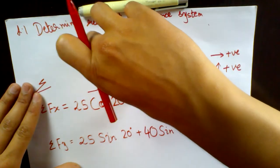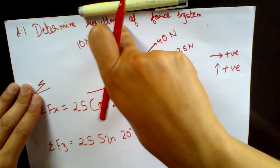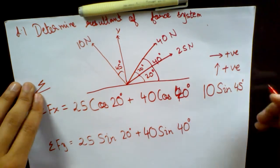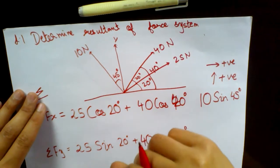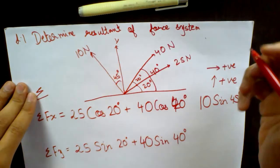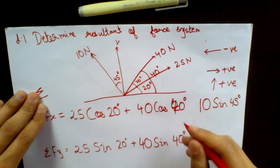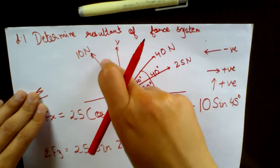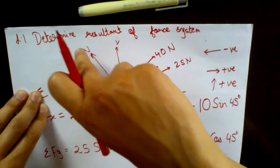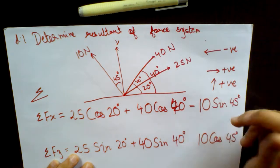Thirdly, you have this force making an angle with the positive y-axis. Because it is making an angle with the y-axis, the x-component is calculated as 10 sin 45 degrees. Now we have to pay attention to the signs, because it is going in the leftward direction. When a force moves towards the left-hand side of the x-axis, you term it as negative. So this force will be negative 10 sin 45. For the y-component, you have 10 cos 45 degrees, and because it is moving in the upward direction, it is positive.